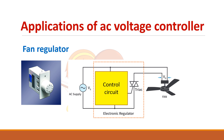The best application of an AC voltage regulator is the fan regulator. The AC supply is connected to the fan through a regulator that consists of a TRIAC and a control circuit. By controlling the firing angle of the TRIAC, the voltage applied to the fan is reduced, which reduces the fan speed.